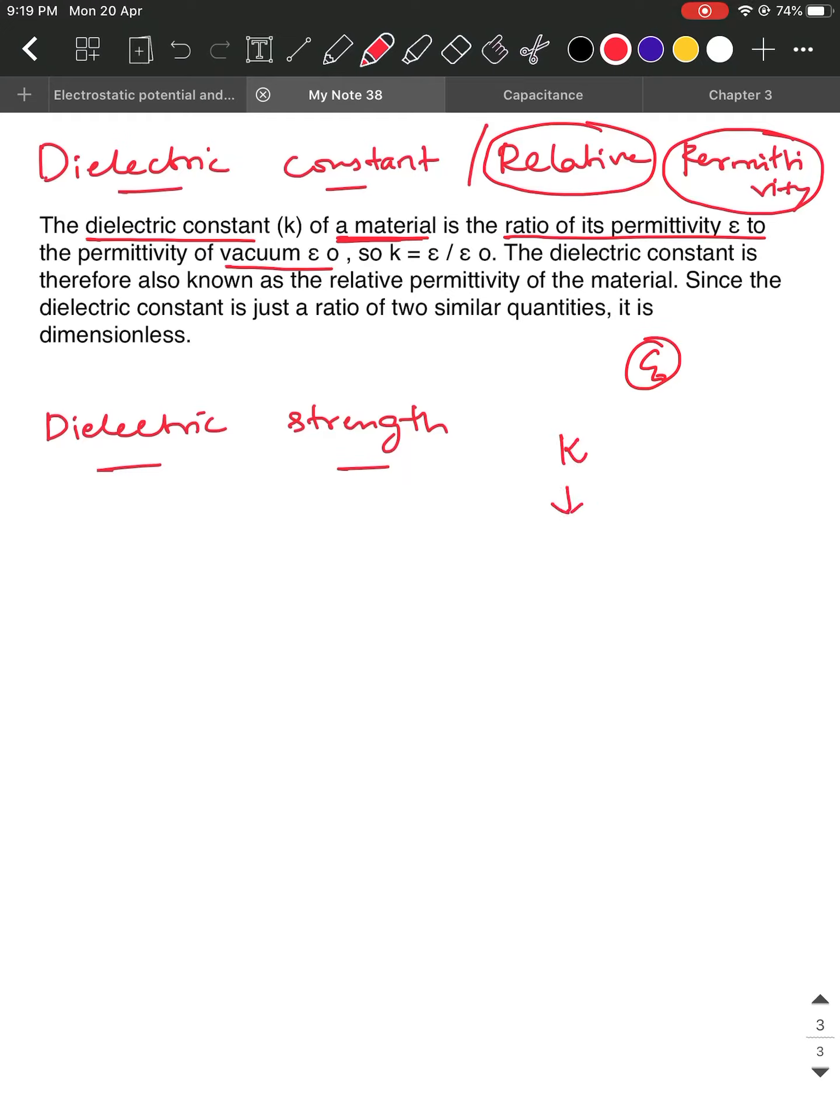There is a Greek alphabet we call it as kappa, or you can also write it as epsilon r. Epsilon r stands for relative permittivity.